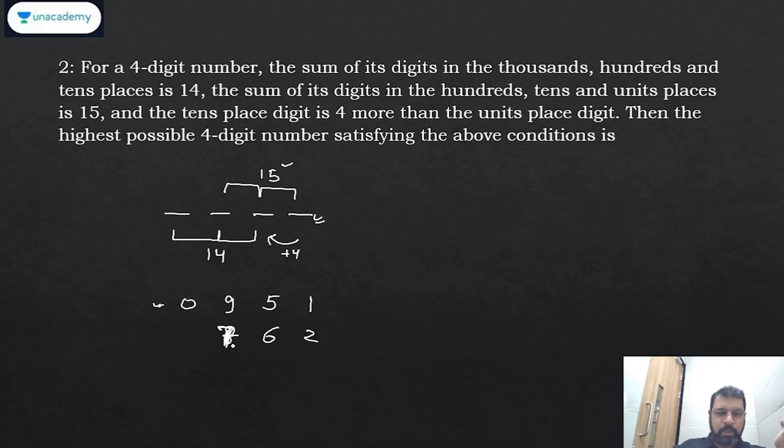And now their sum is 14, so this becomes 1. See, as you increase from here to here, this also increases by 1. For maximum number, when your first place, thousands place, is maximum, then you'll get the answer. And see how far you can go. This term is also increasing, so maximum this can go to 9. When will it go to 9? When this is 5.